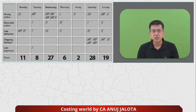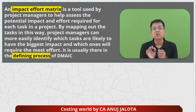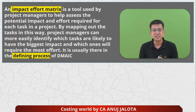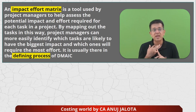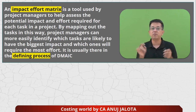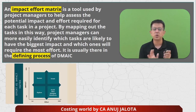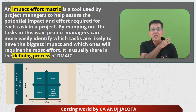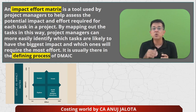The third tool is the Impact or Effort Matrix. This is a tool used by project managers to assess the potential impact and the effort required for each task in a project. Every project has small tasks, each requiring effort and having an impact. We want to see which tasks require maximum effort and which have maximum impact on the outcome — presented in matrix form. This is used in the defining stage because it helps identify which activities require more effort before you start solving the problem.